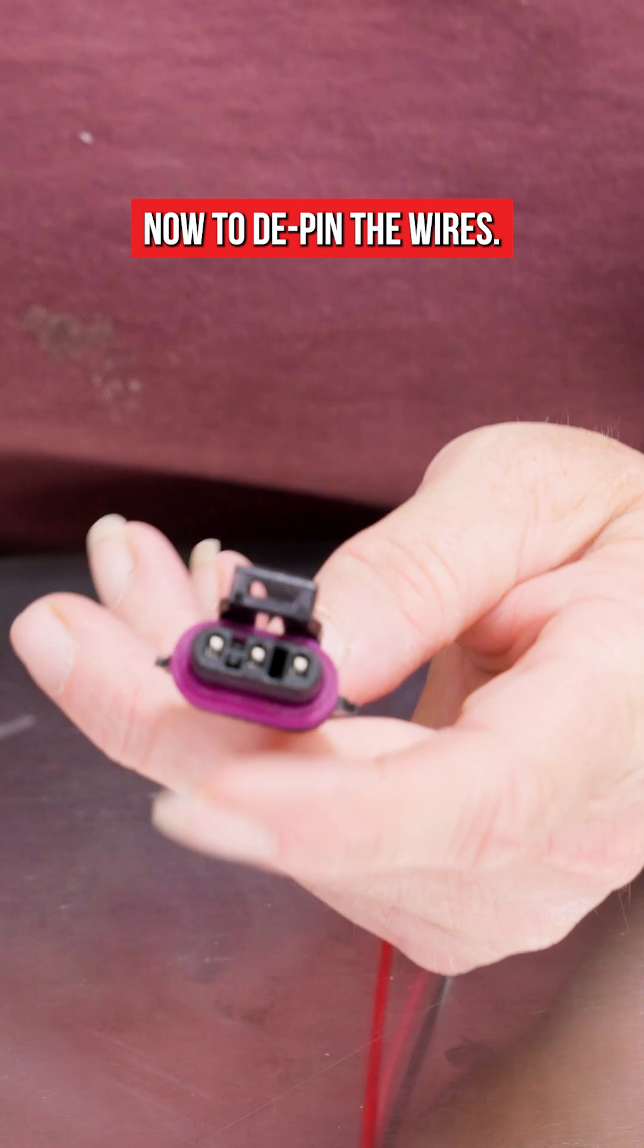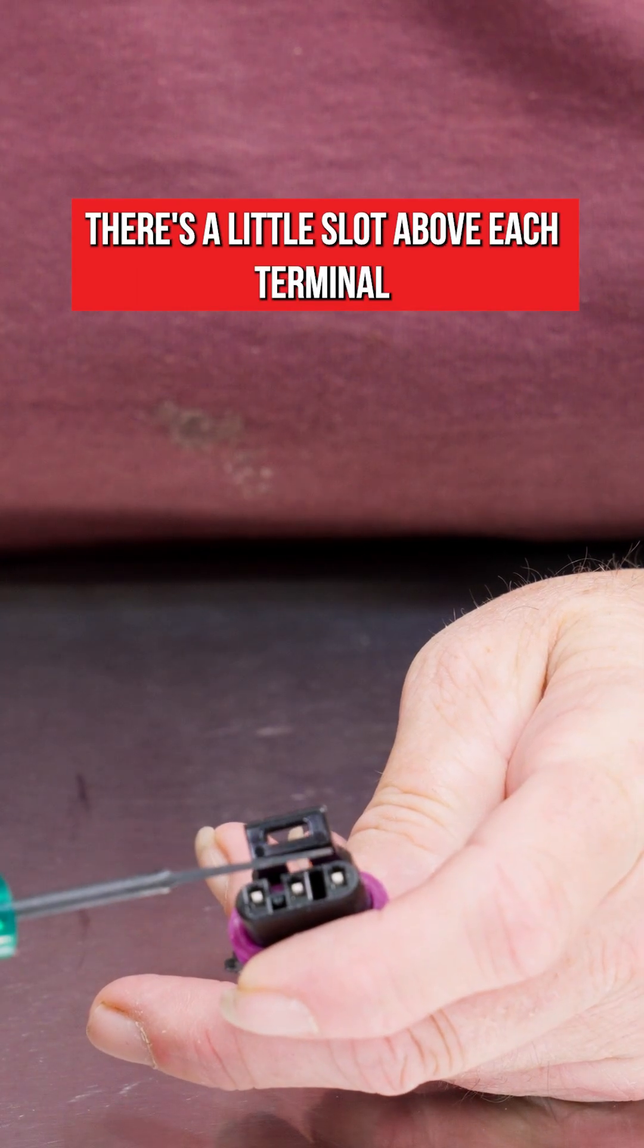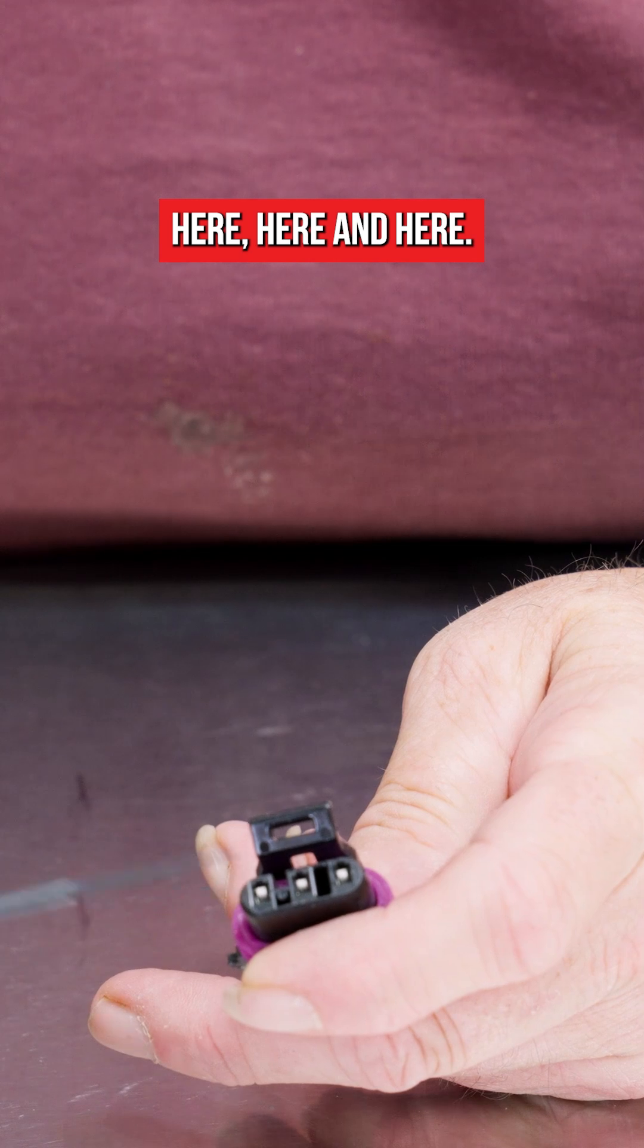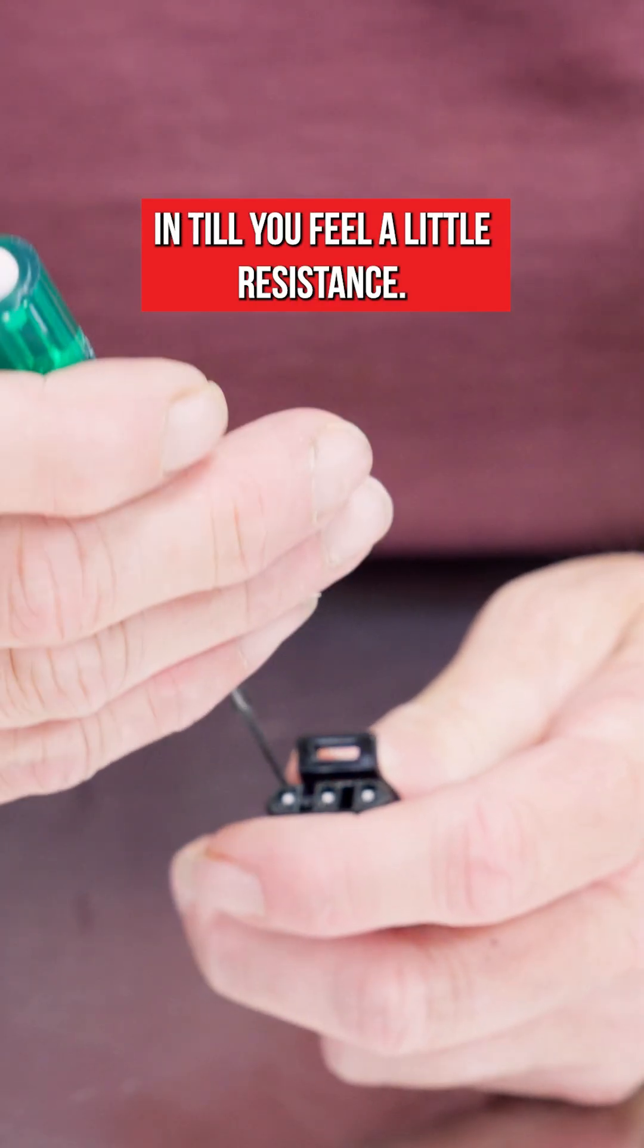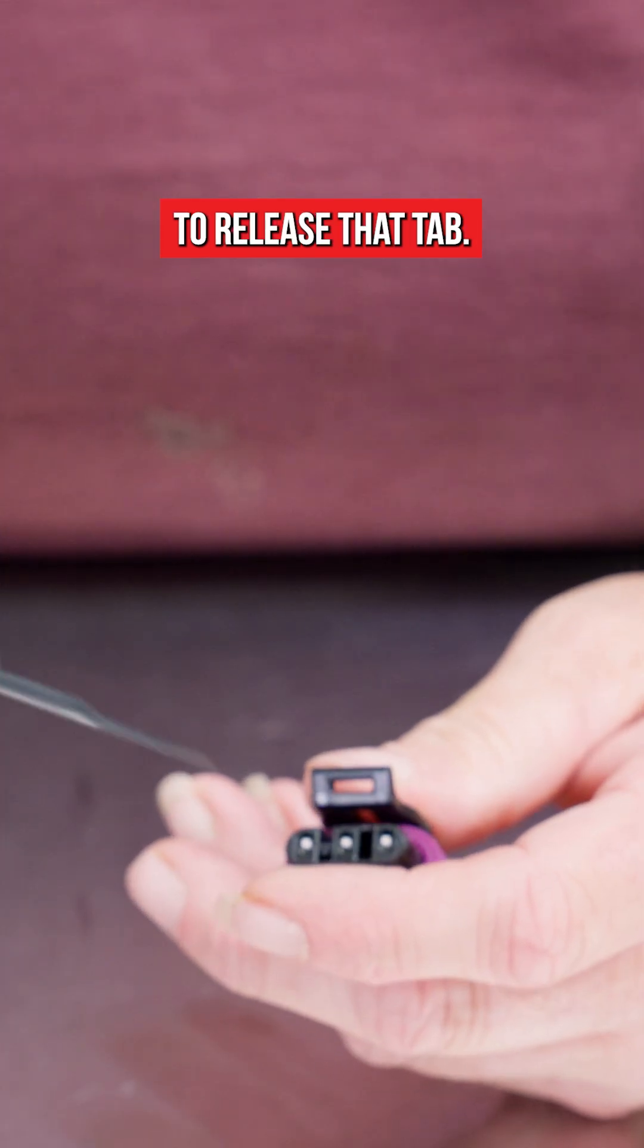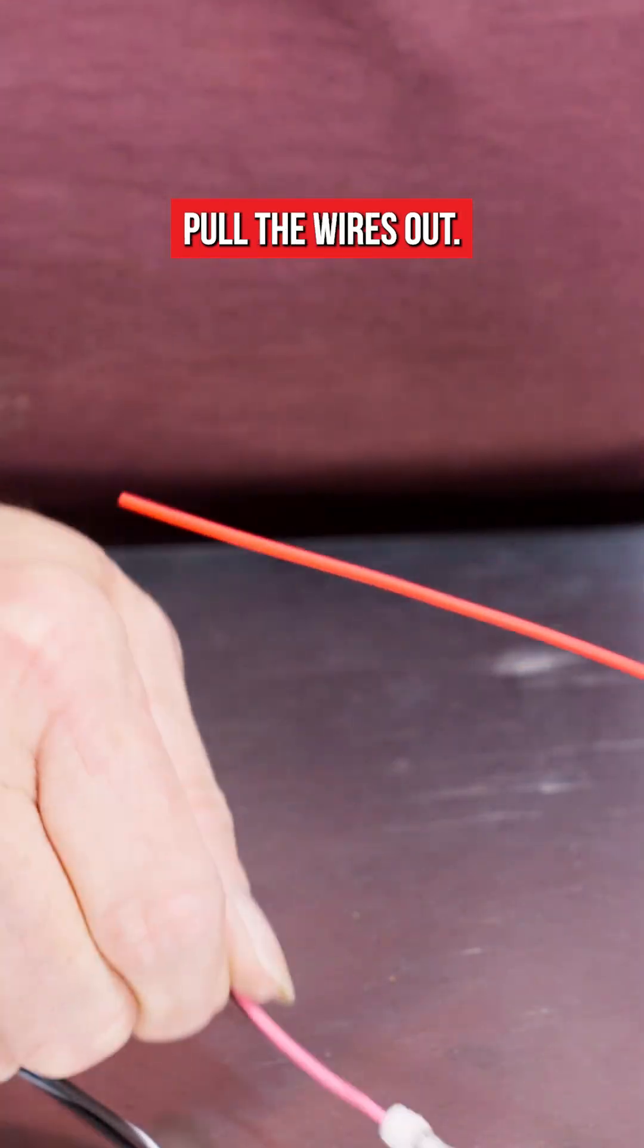Now to d-pin the wires there's a little slot above each terminal. Here, here, and here. We're just going to slide our tool in until you feel a little resistance. Push down just a little bit to release that tab. We're going to just simply pull the wires out.